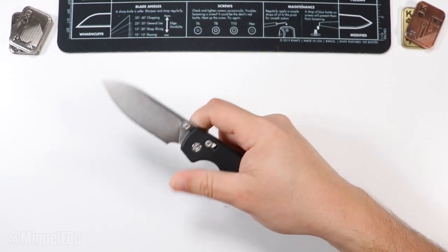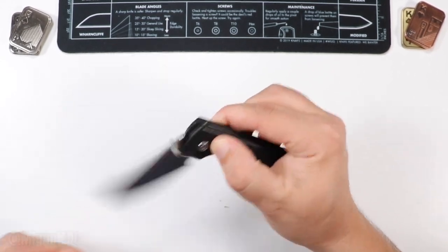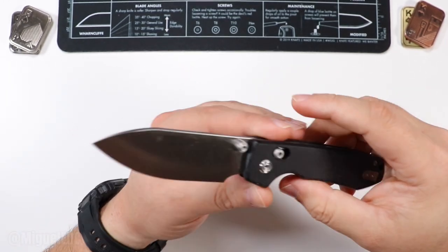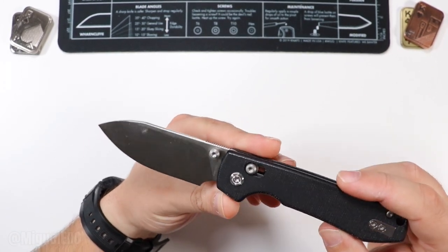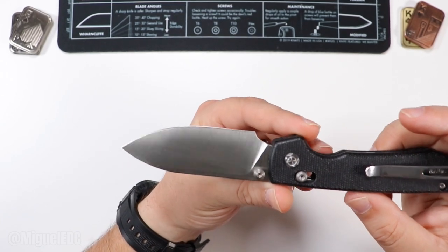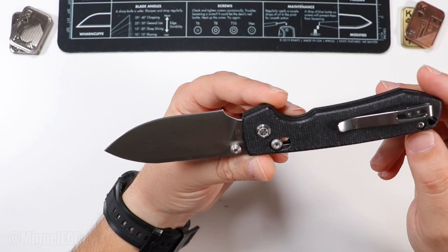The action here is pretty good. The deployment right there is nice. What are we dealing with steel-wise? We have a satin finish flat grind going on on this bad boy. Again, 14C28N on the Raccoon.